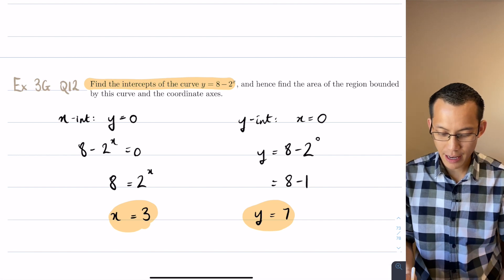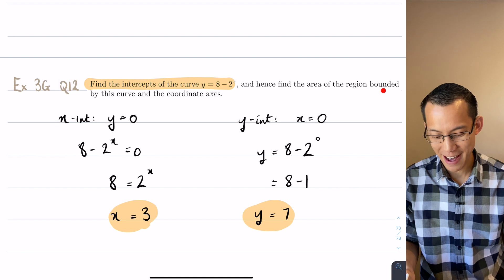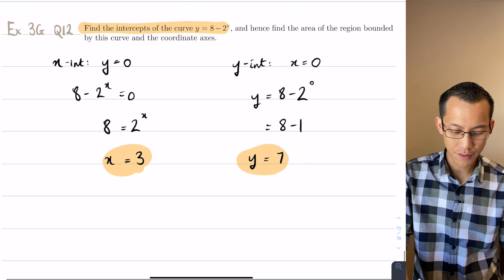Now you can see it then says I'm ready to read the rest of the question. Hence find the area of the region bounded by this curve and the coordinate axes. So let's do a rough sketch of this.